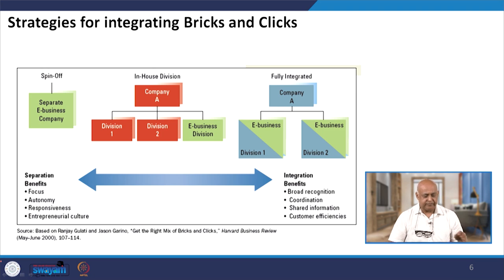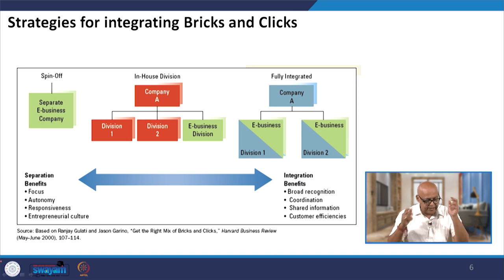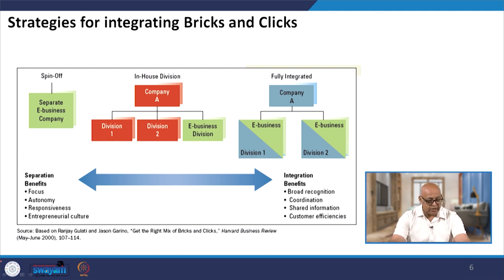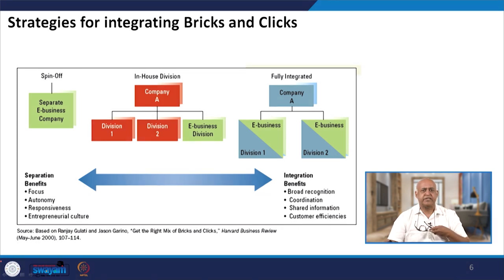Here we find how a spin-off — that is, a separate e-business company — contrasts with an in-house division. A company can have Division 1, Division 2, and an E-business division, or be fully integrated. Separation benefits include focus, autonomy, responsiveness, and entrepreneurial culture, while integration benefits include broad recognition, coordination, shared information, and customer efficiencies.